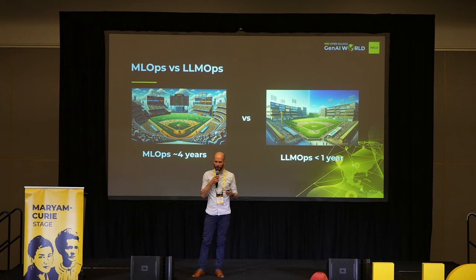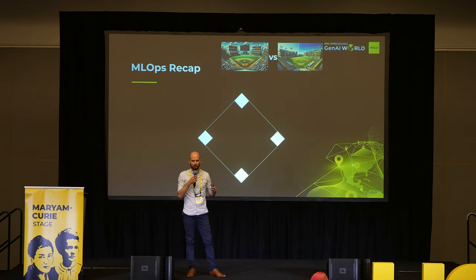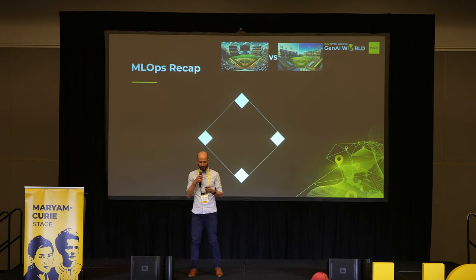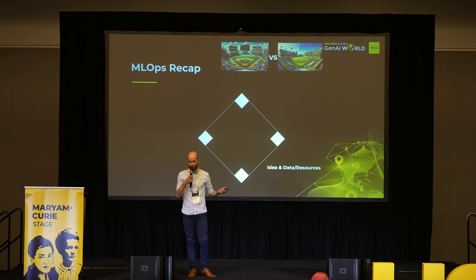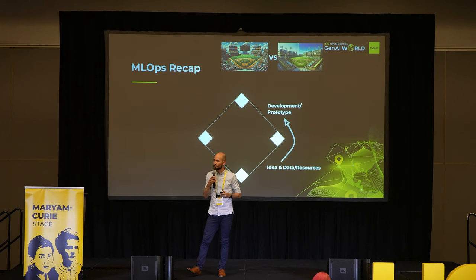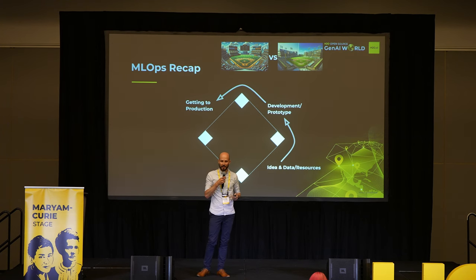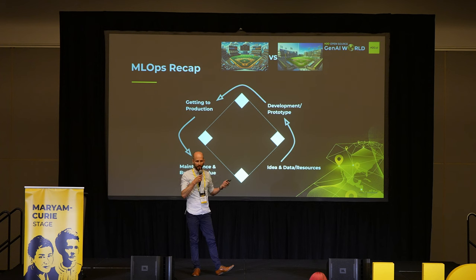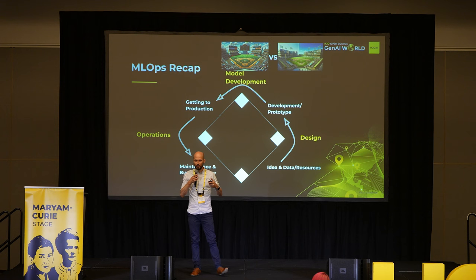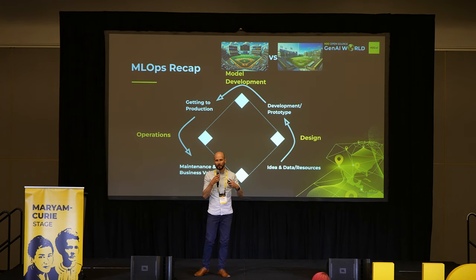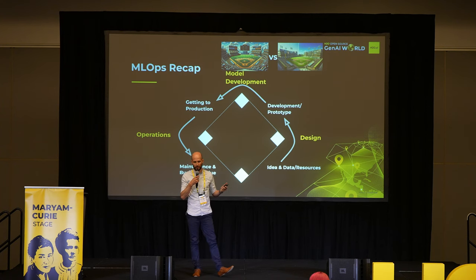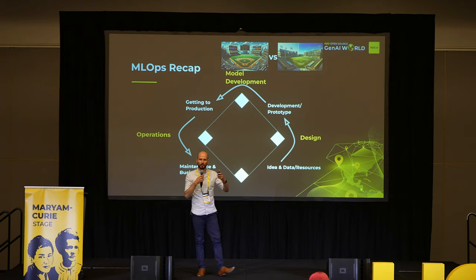So how does LLMOps compare to MLOps? Let's recap MLOps a little bit. I have a baseball diamond here, and the idea is that with MLOps you're hoping to get machine learning to production. You have some idea and the right data and resources. You then develop some sort of prototype around first base. To get to second, you take what you developed and try to get it to production. Rounding third to home is when you have it in production, you can monitor and maintain it, and you're showing business value. MLOps is the process of things and systems that help you round the bases to hit a home run — from design, to model development, to operations.